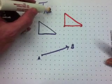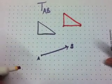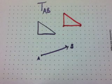That's the transformation from A to B, because to move from A to B, we move over 6 and up 2. So that's a translation.